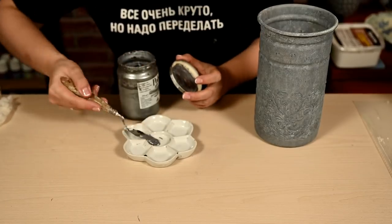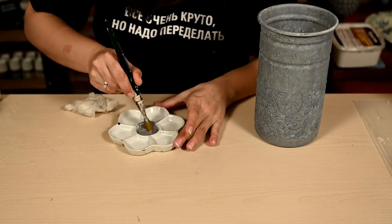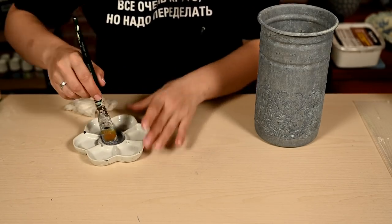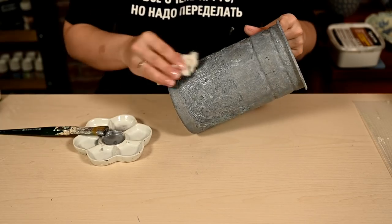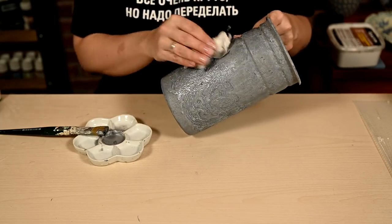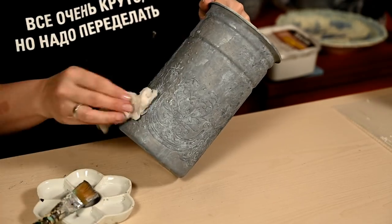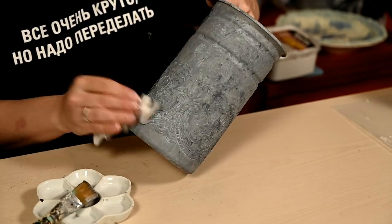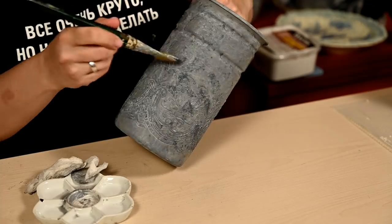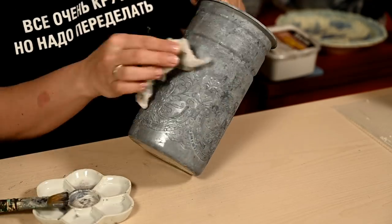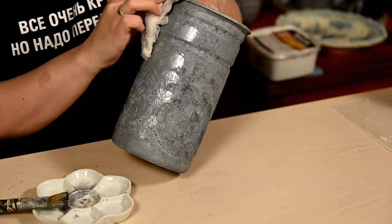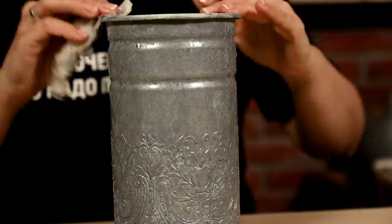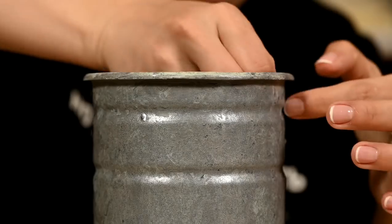For the final layer I'll use silver paint and repeat everything one more time. After this last layer the surface becomes almost indistinguishable from a real old zinc one.